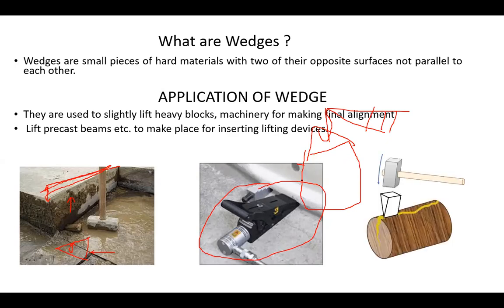A classic example of wedge application is splitting wooden logs for fuel. A metal chisel is driven into the wooden log using a hammer, developing a long crack along the log, thereby splitting it for use as fuel.